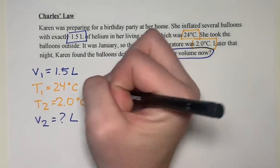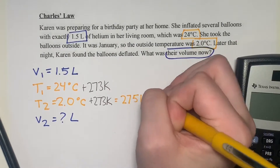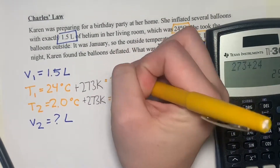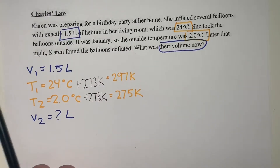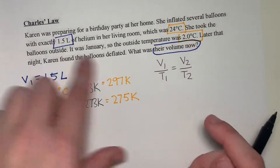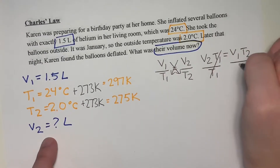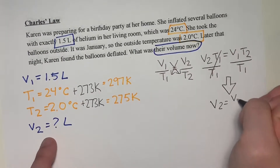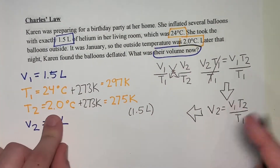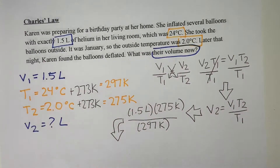So now we need to convert Celsius to Kelvin by adding 273. So T2 is 275 Kelvin and T1 is 297 Kelvin. Now that all our units are good, we write down the equation: V1 over T1 equals V2 over T2. We need V2, so we cross multiply: V2 T1 equals V1 T2. Then we get V2 by itself, so our new equation is V2 equals V1 T2 over T1. Now we just plug everything in: 1.5 liters times 275 Kelvin, all over 297 Kelvin.